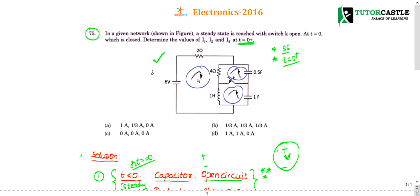Checking the options: option A gives I1 minus I2 equal to 2/3 — this is the right choice. Option B has I1 equal to I2, giving a difference of 0 — incorrect. Options C and D also give 0 minus 0 and 1 minus 1 respectively — both incorrect. No need to calculate the remaining currents individually; time management is important in a written test.